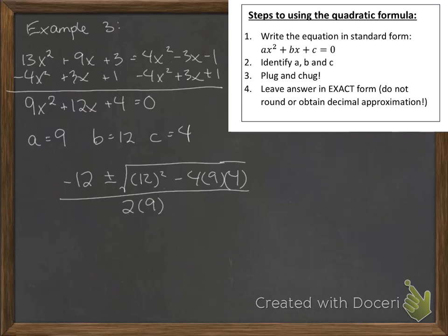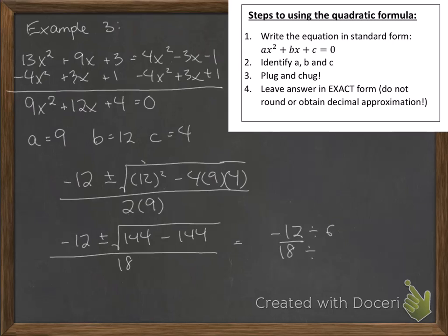So let's see if we can simplify this. So we have negative 12 plus or minus the square root of 144 minus 4 times 9 times 4. Well, 4 times 9 times 4 is actually also 144. And then we have 2 times 9 that is 18. So notice 144 minus 144 is 0. The square root of 0 is 0. So we actually only get a single solution, negative 12 over 18. And of course we can reduce this. They are both divisible by 6. So negative 12 divided by 6 is negative 2. 18 divided by 6 is 3.